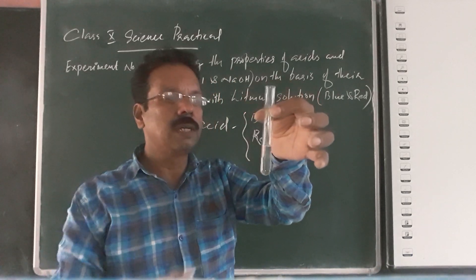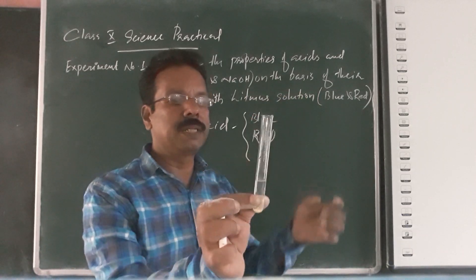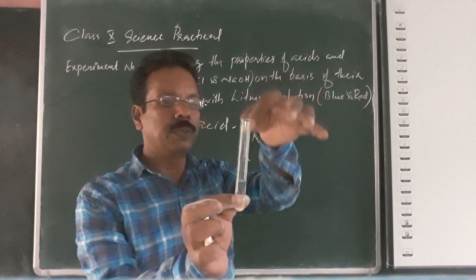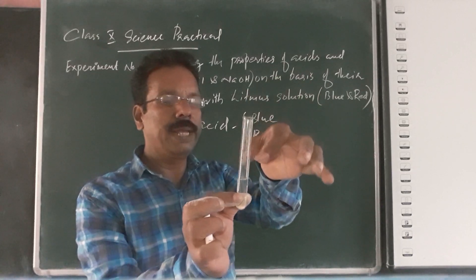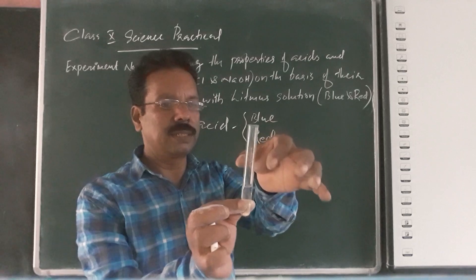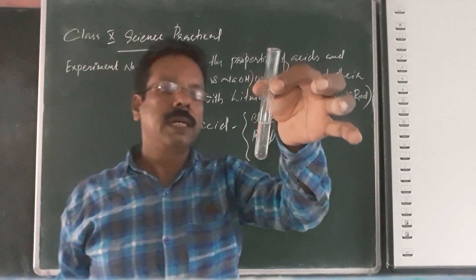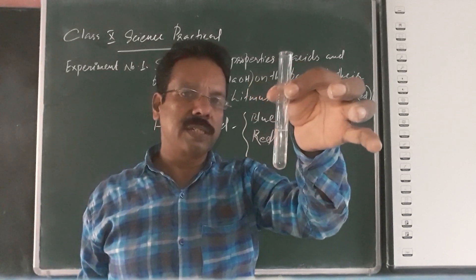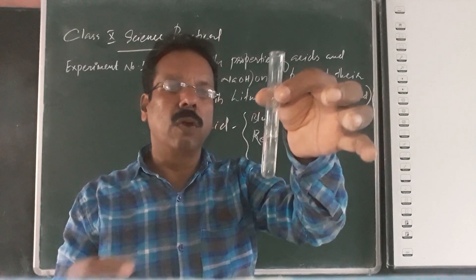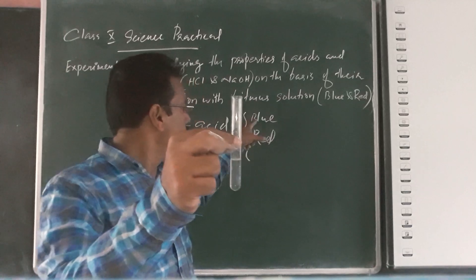First, we have to take a test tube and take water in it. After that, by using a pipette, we have to add a few drops of concentrated hydrochloric acid. Now this is a prepared hydrochloric acid solution in the test tube.